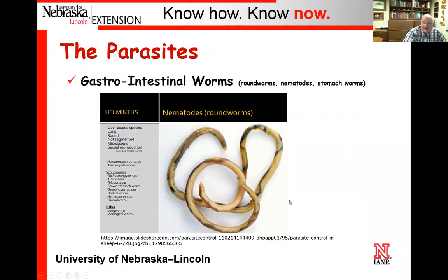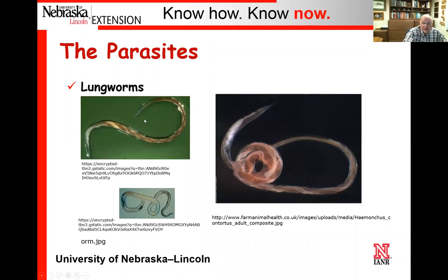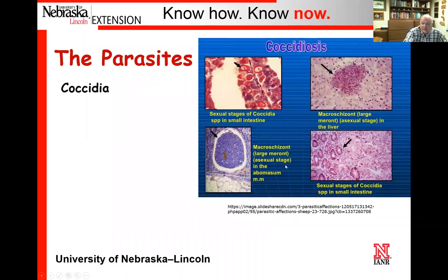Just to give you some general pictures: these are additional pictures of the actual parasites themselves. This is a picture of nematodes or roundworms — basically round and slender, extremely long. Here's a picture of a tapeworm — again, extremely long, somewhat segmented. These are lungworms that kind of penetrate that area. And liver flukes — kind of a unique little thing, a common parasite particularly as you go a little bit farther south. And then he's got some pictures of coccidia, which manifests itself as coccidiosis.